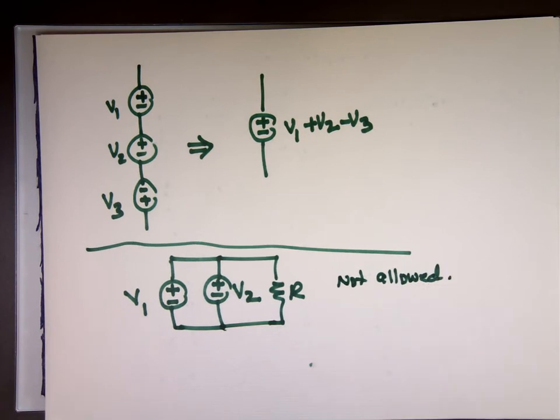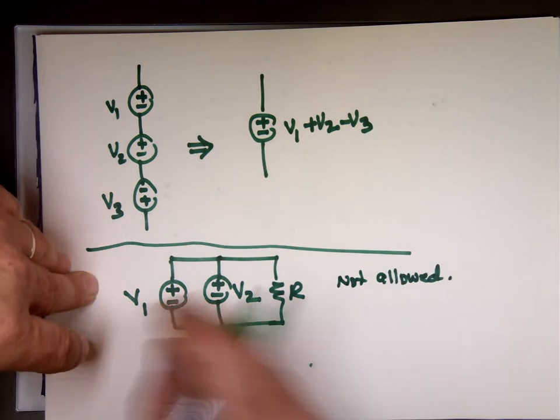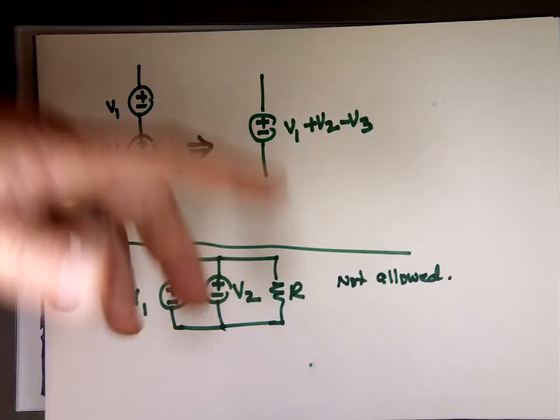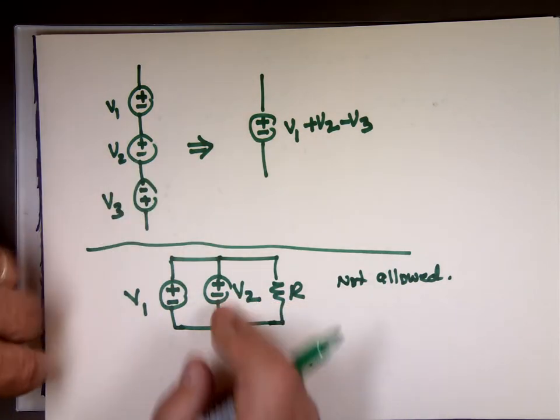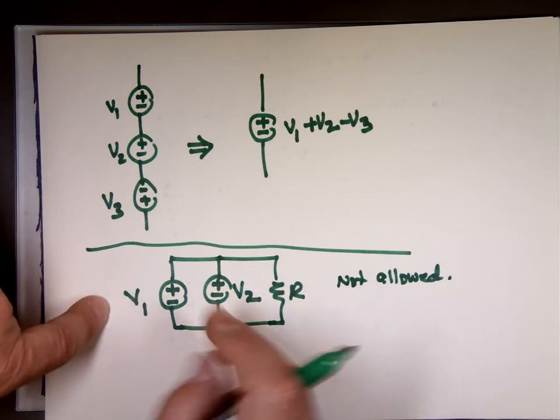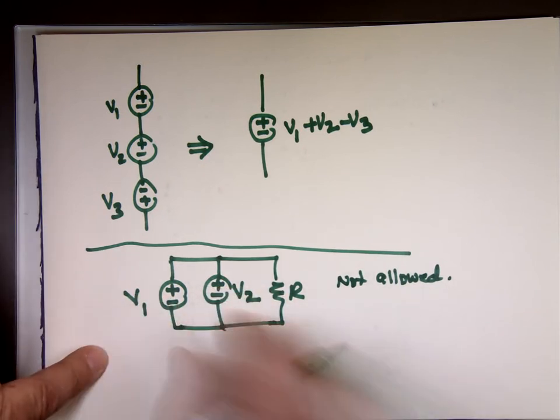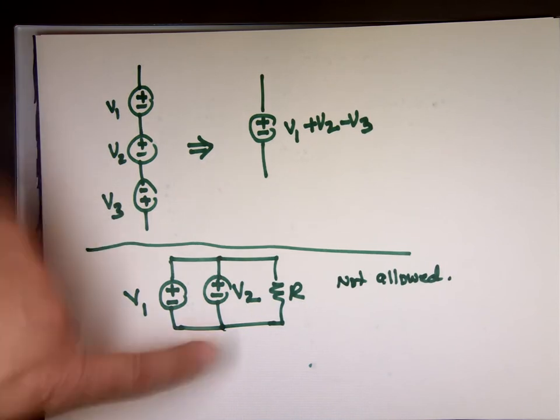This is actually not allowed. This will damage your source. Because you're trying to make, these are in parallel. Joe said they have the same voltage. Well, they have the same voltage. How can this be 5 volts and that's 3 volts? They have the same voltage. So something has to give. 5 and 3, this might go to 4 and this might go to 4. Or this might go to 2 and this one 2. But you can't have voltage sources connected in parallel. You can only have them in series. Here it's okay, not okay.